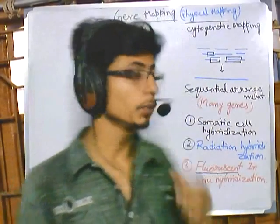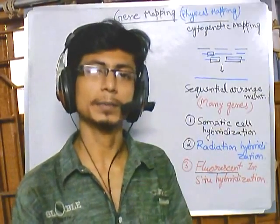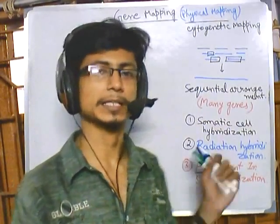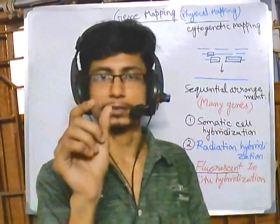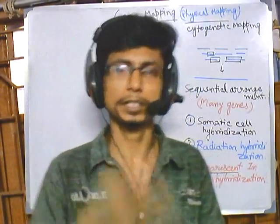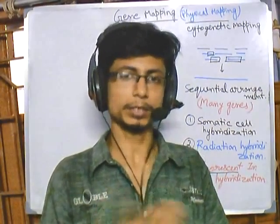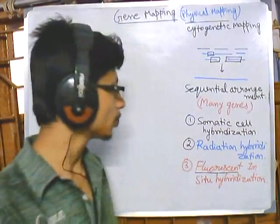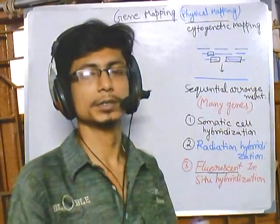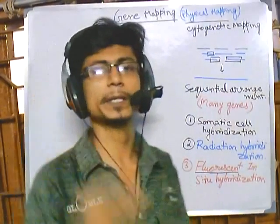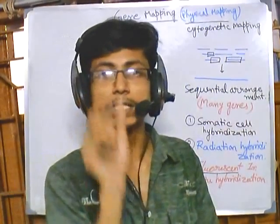In future videos we will talk about each of these techniques in detail and see the remarkable ways that genes can be mapped using them. Remember that in all cases we will be using genetic markers, and the markers must be a mixture of all types — visible markers, chemical markers, and molecular markers. We are not depending on a single gene but considering a whole bunch of genes.